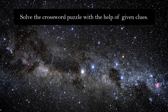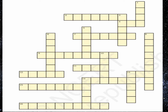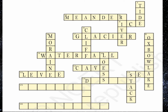Now solve the crossword puzzle with the help of the given clues. The answers are: tide, meander, river, ice, cliff, moraine, glacier, oxbow lakes, waterfall, loess, cave, levee, stacks, sea, desert, delta, sand dunes, and floodplains.